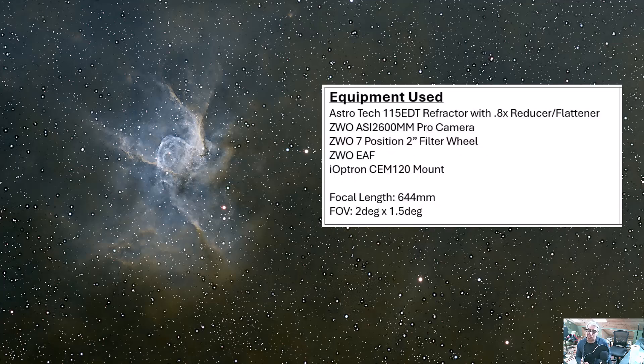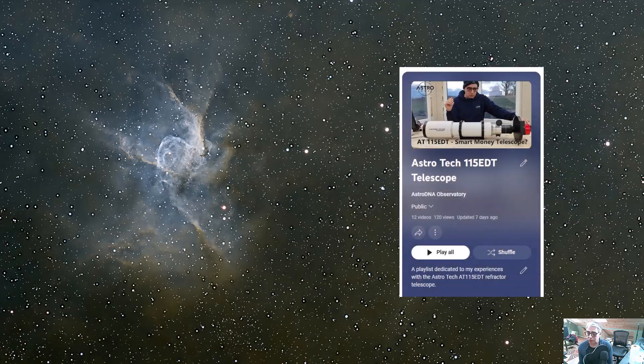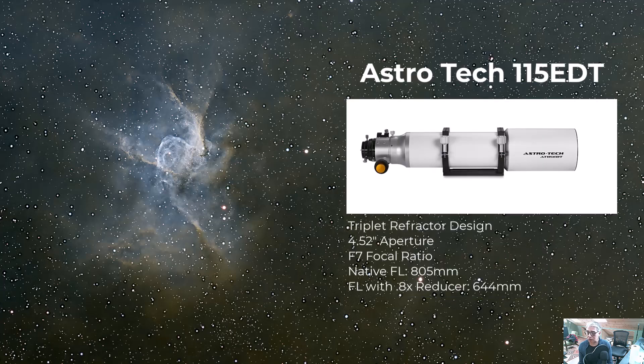In terms of the equipment that I used, this is part of an extensive trial of the AstroTek 115 EDT refractor telescope. This is a triplet design. I love this telescope. I think it's a wonderful value in the lower mid-focal range. It has a native focal ratio of F7, but you're going to probably use it with the 0.8 times reducer field flattener, and that's going to give you an effective focal length of about 644 millimeters.